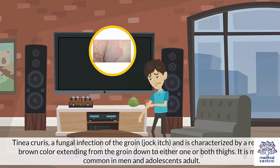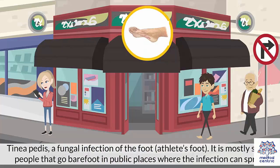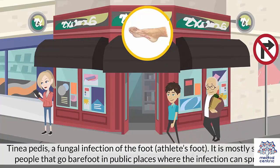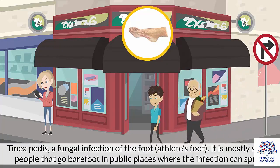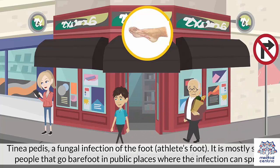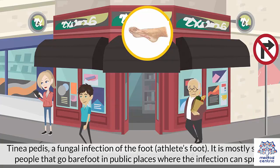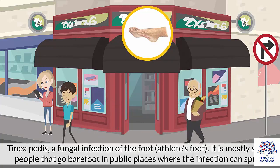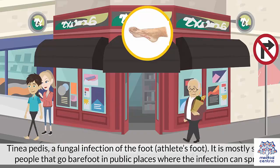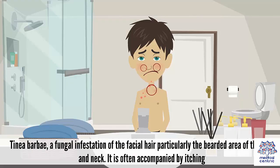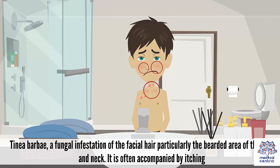Tinea cruris is most common in men and adolescent adults. Tinea pedis is a fungal infection of the foot, or athlete's foot, and is mostly seen in people that go barefoot in public places where the infection can spread. Tinea barbae is a fungal infestation of the facial hair, particularly the bearded area of the face and neck, and is often accompanied by itching.